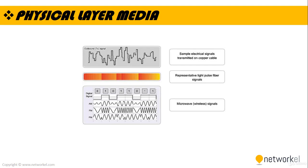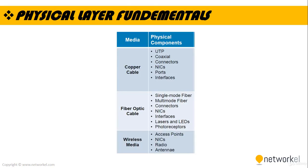The bit stream may be grouped into code words or symbols and converted to a physical signal that is transmitted over a transmission medium. The physical layer provides electrical, mechanical, and procedural interface to the transmission medium.